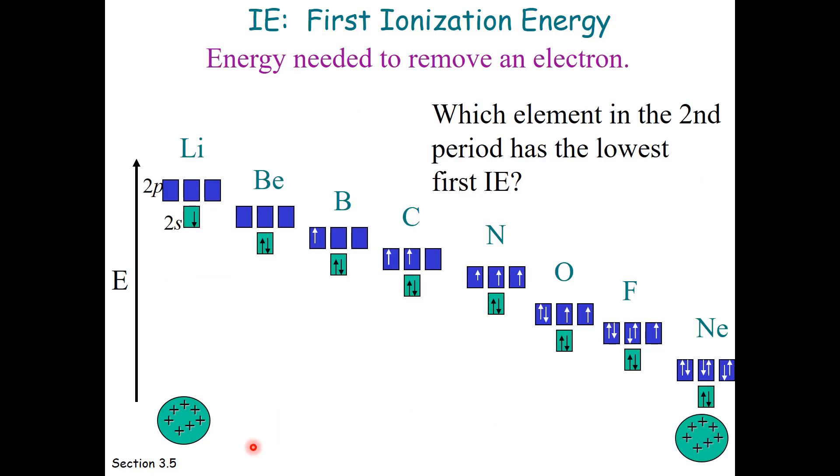So let's go back to our orbital energy diagrams of the second period. We would like to know which element in the second period has the lowest first ionization energy. So we're going to start at the top and reach down and grab an electron. And the first electron we encounter belongs to lithium, so lithium would have the lowest ionization energy.